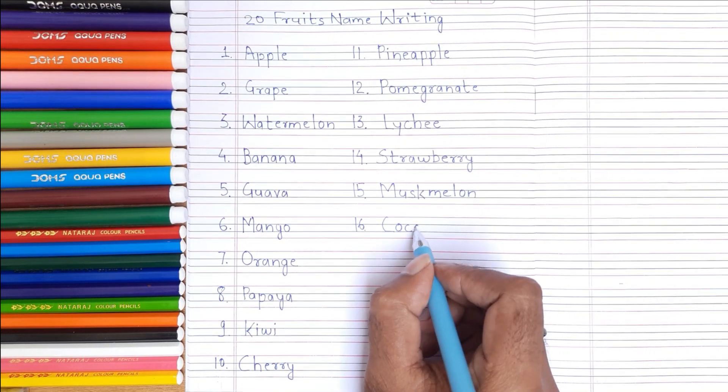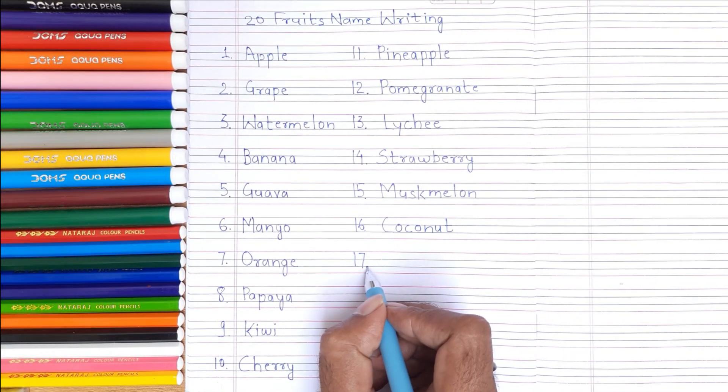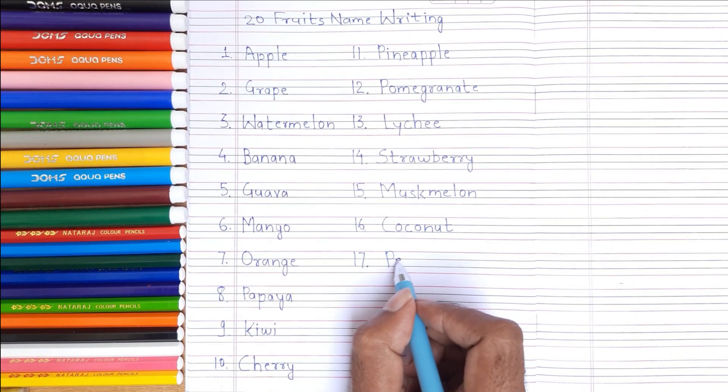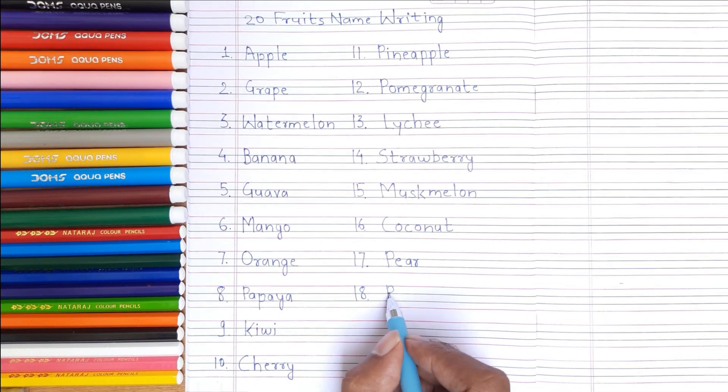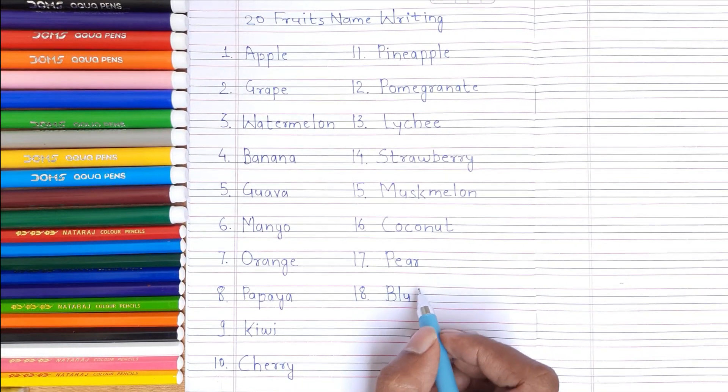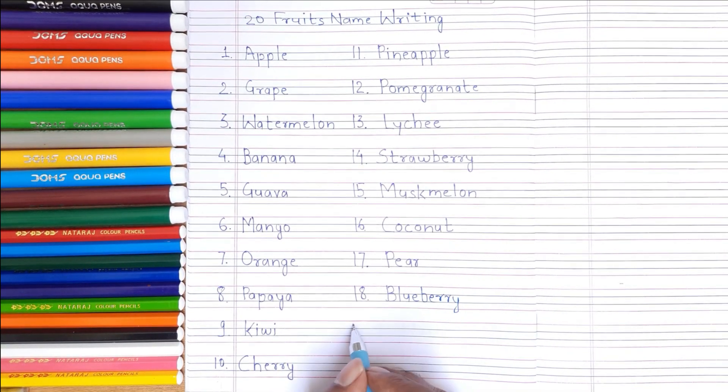C-O-C-O-N-U-T Coconut. 17th, P-E-A-R Pear. 18th, B-L-U-E-B-E-R-R-Y Blueberry. 19th.